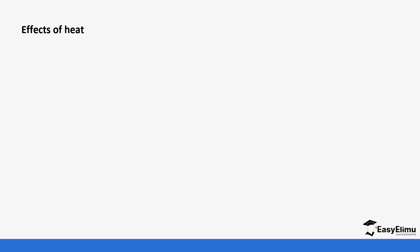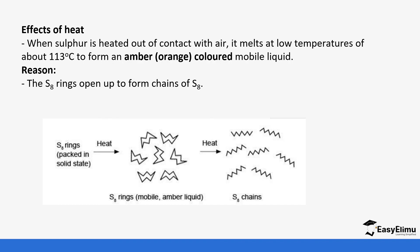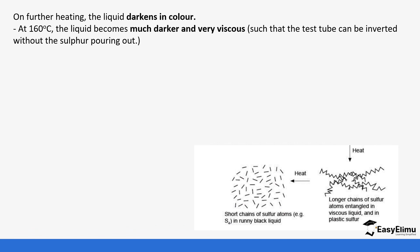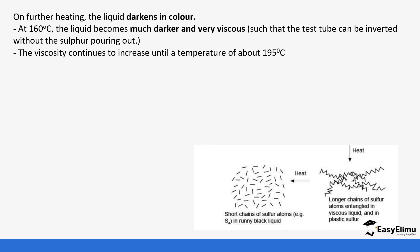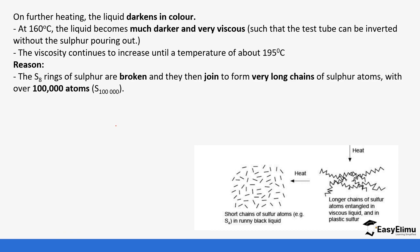When sulfur is heated out of contact with air, it melts at around 119°C forming an orange-colored mobile liquid, as the S8 rings open up to form chains of S8. On further heating to 160°C the liquid becomes darker and very viscous — the test tube can be inverted without the sulfur pouring out. Viscosity continues to increase until about 195°C.